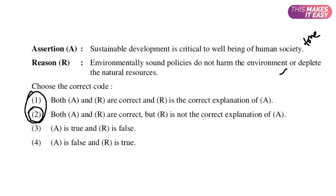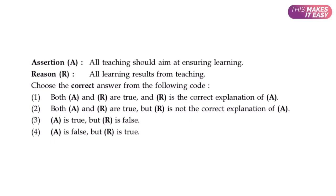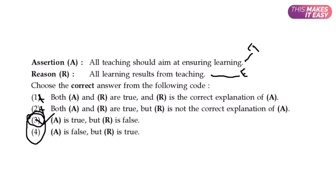Let's look at another example. The assertion says all teaching should aim at ensuring learning — that's true. The reason says all learning results from teaching — that is false, because some learning happens without teaching as well. So we easily knock out the first two options, and the answer comes in the third or fourth option. Since the assertion is correct and the reason is false, the third option is our answer.